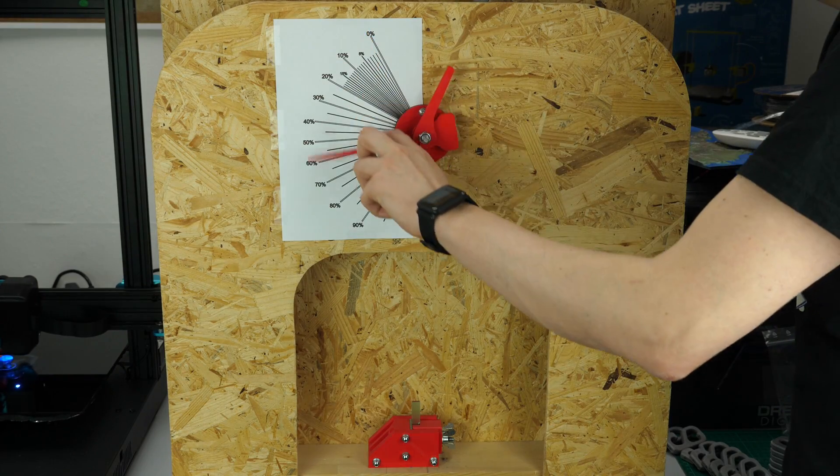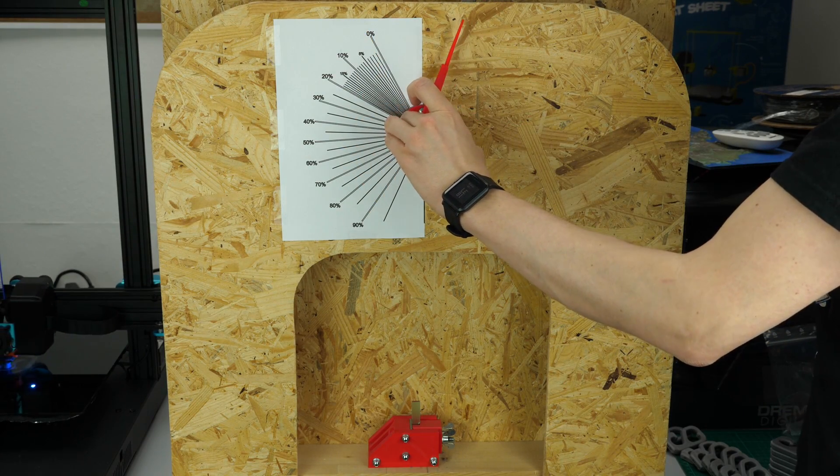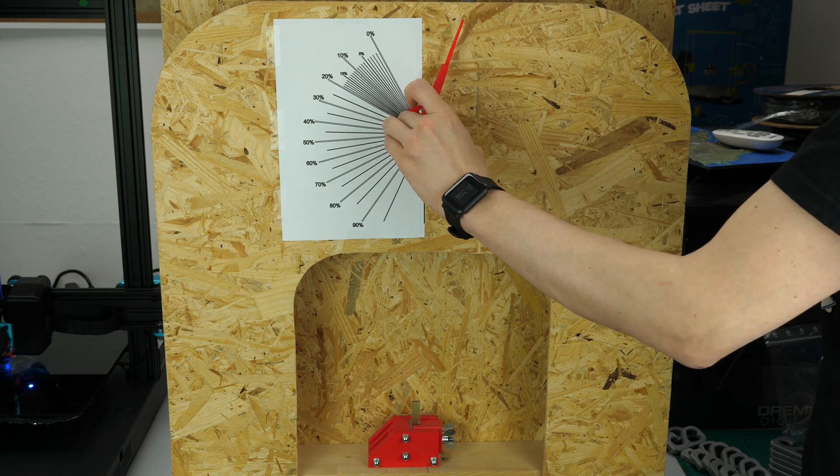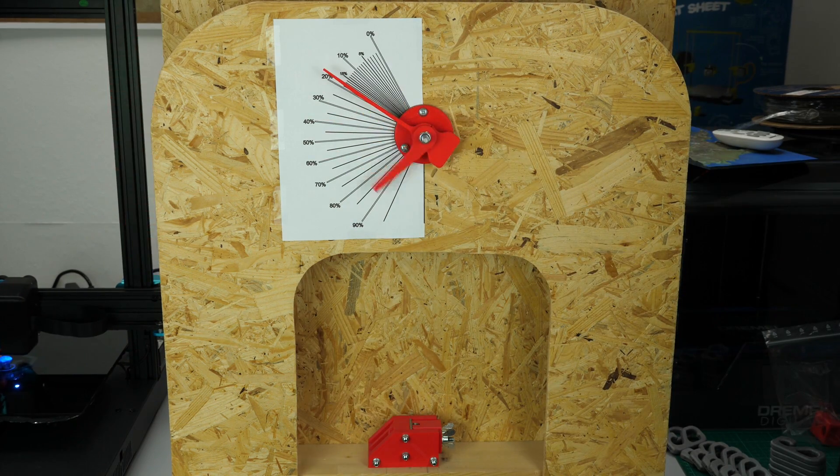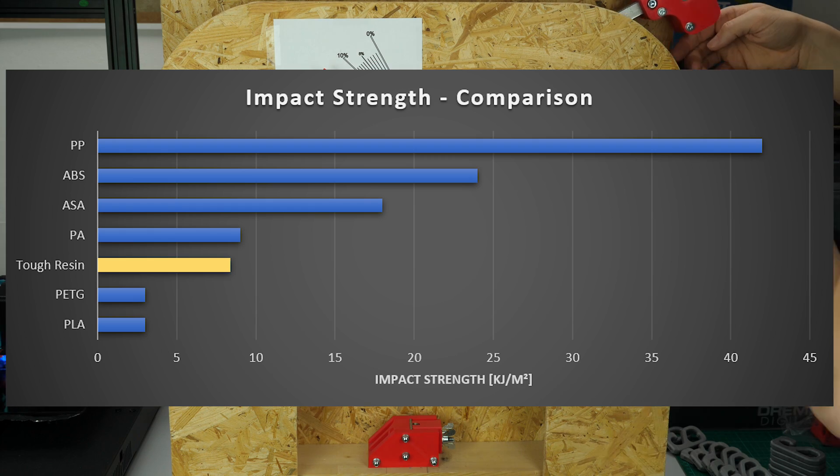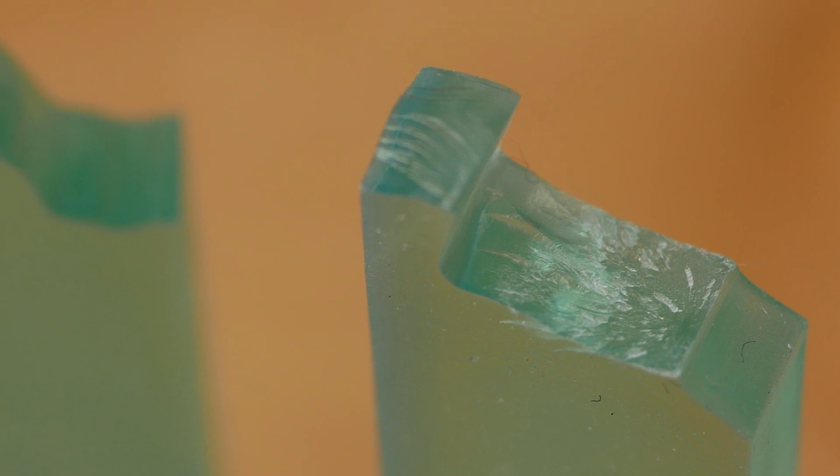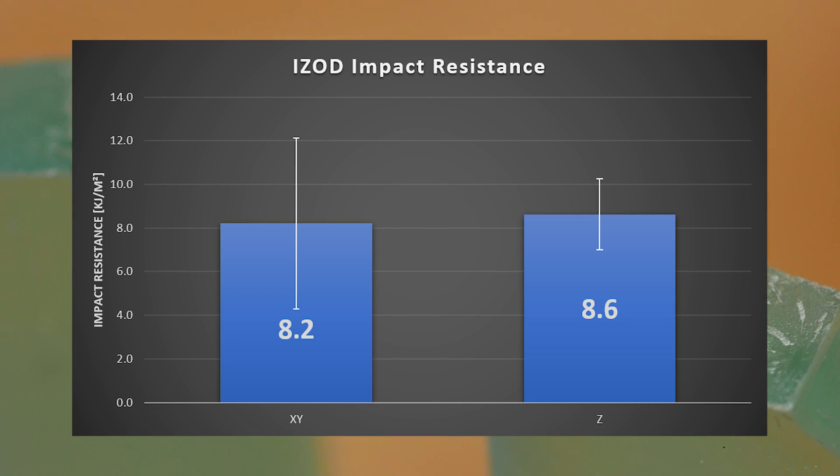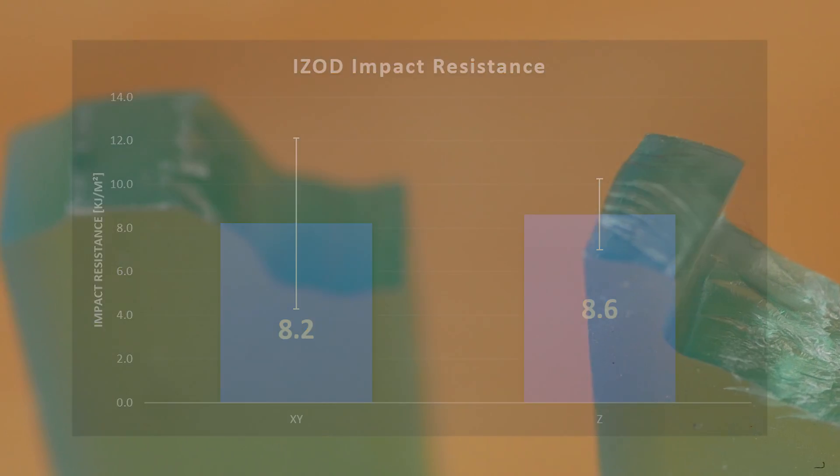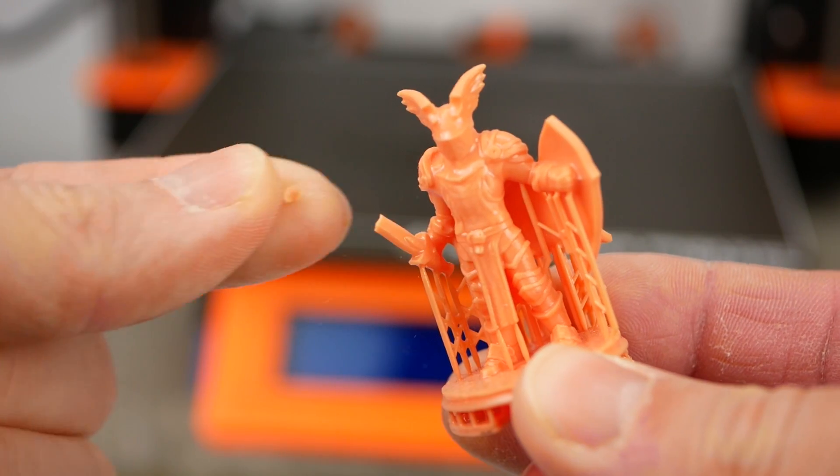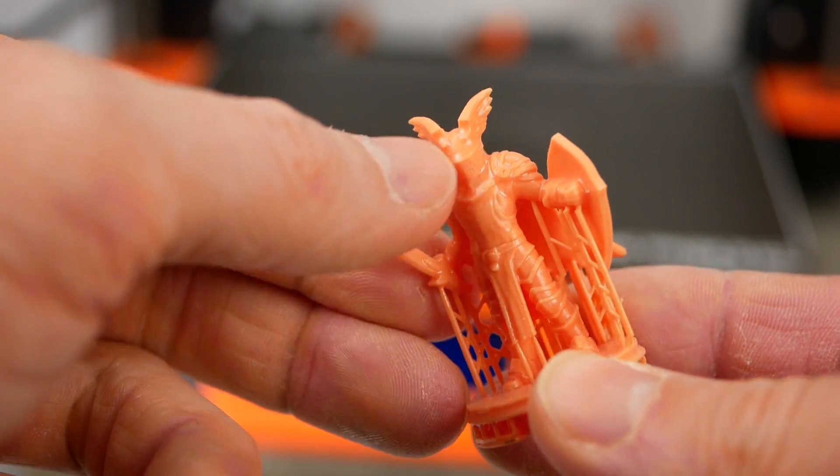During the impact test I struck the coupons with a hammer and measured the amount of energy absorbed during this process. Here the material didn't turn out to be the strongest but still 2 or 3 times better than PLA or PETG. Here again both printing orientations performed equally well, which is really impressive. Especially when taking a look at the brittleness of standard photopolymers, I think the name tough resin is really well deserved.